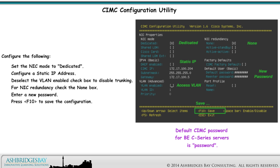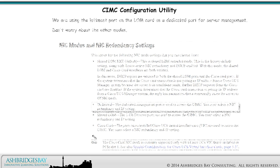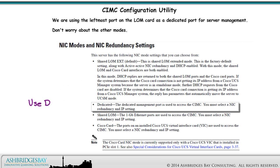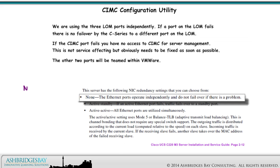The default CIMC password for BE C Series servers is 'password.' Here are the NIC modes for the LOM card. We are using the leftmost port on the LOM card as a dedicated port for server management. We are using the three LOM ports independently. If a port on the LOM fails, there is no failover by the C Series to a different port on the LOM. If the CIMC port fails, you have no access to CIMC for server management. This is not service-affecting, but obviously needs to be fixed as soon as possible.